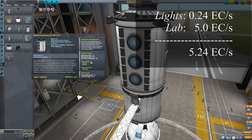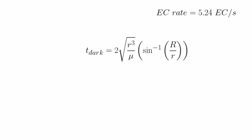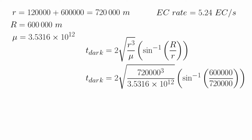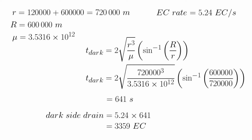Now our formula from last episode will help. I'm going to put this into a 120-kilometer orbit around Kerbin, which gives an orbital radius of 720,000 meters. Big R — the radius of Kerbin — is 600,000 meters, and mu, the standard gravitational parameter for Kerbin, is 3.5316 × 10^12. After putting this into a calculator, we find we'll be spending 641 seconds in the dark. Multiplying 641 seconds by our 5.24 EC/s rate gives us 3,359 units of electric charge to get through the night side.